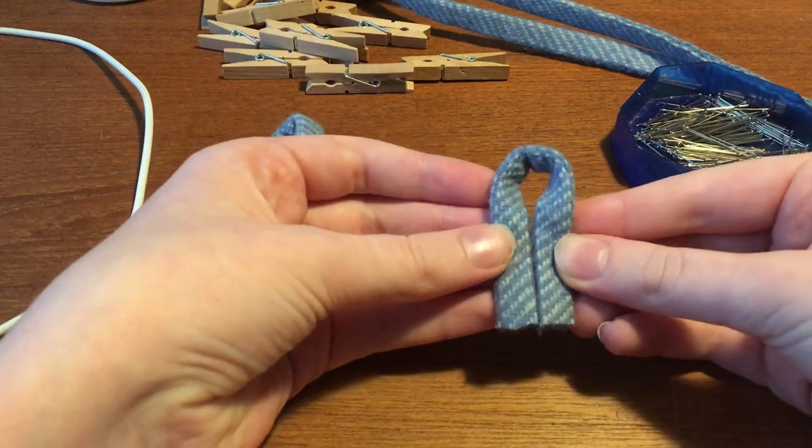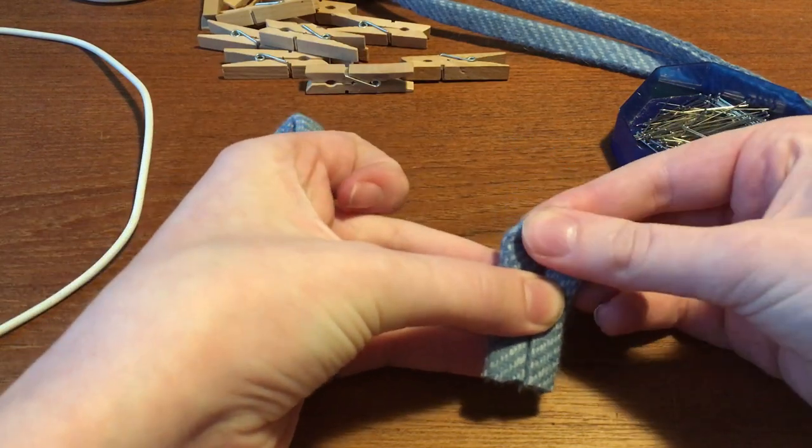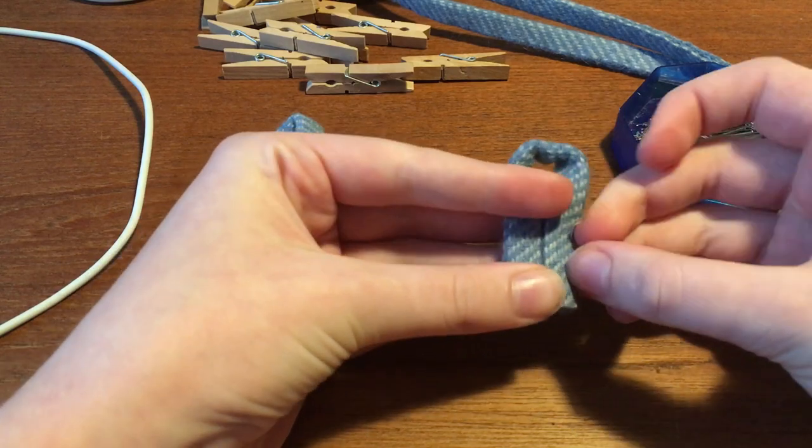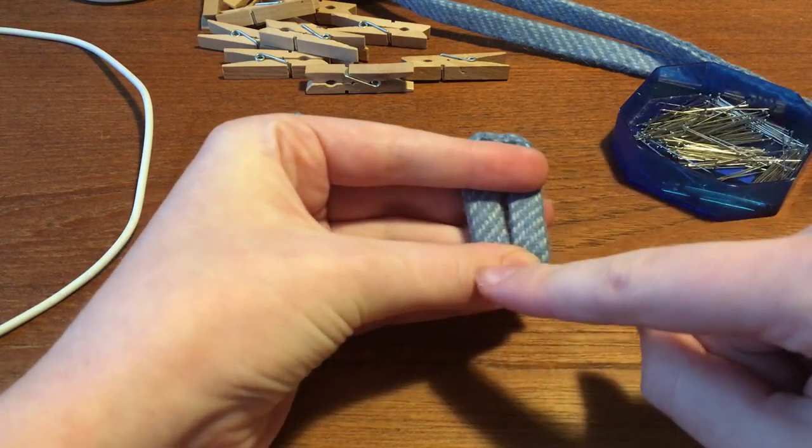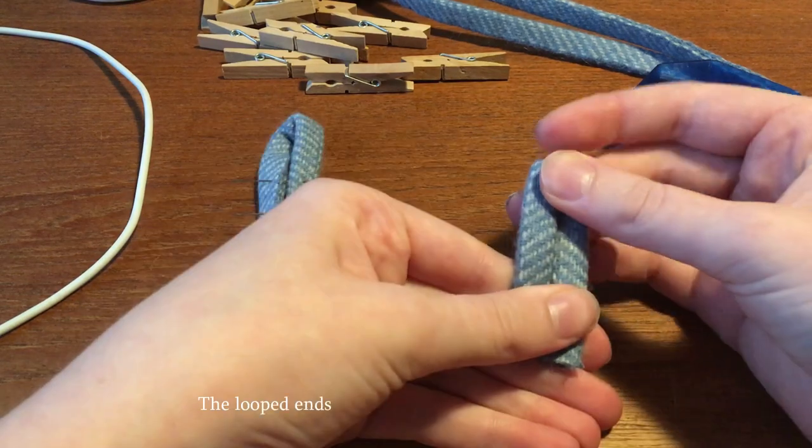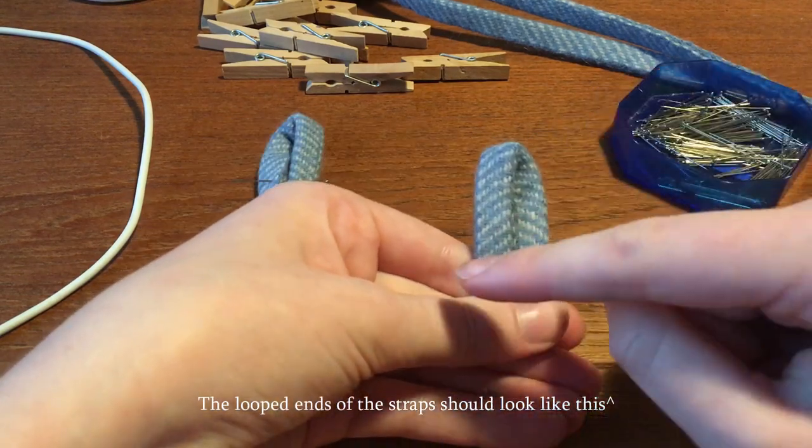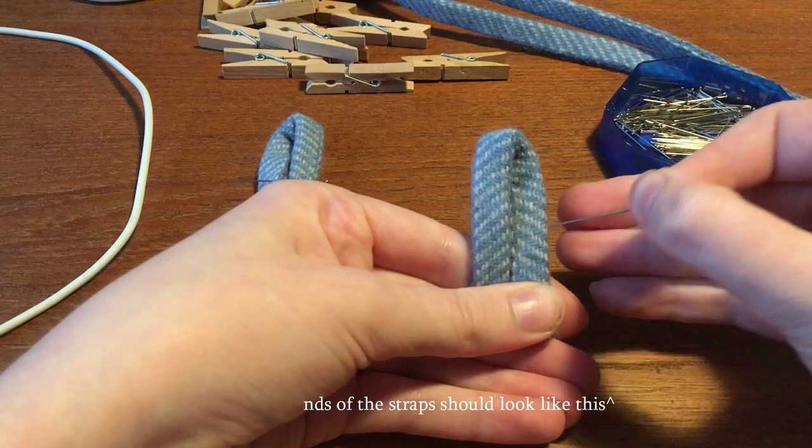This was achieved by basically folding the straps over on themselves and pushing them to lie flat side by side rather than bending them around to be next to each other as this just made slanted lines. It's hard to explain but hopefully the video makes it clear.